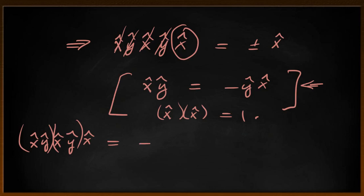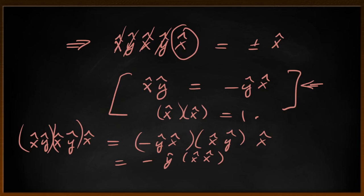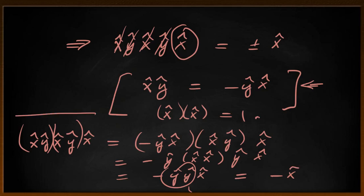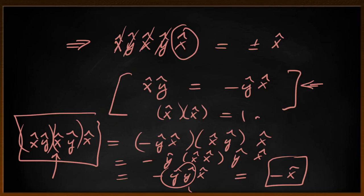Let's go back to the example and see what the actual sign of this product will be — whether it will be plus x-hat or minus x-hat. So: x-hat y-hat, x-hat y-hat, x-hat. One geometric algebra axiom is that the order of any specific multiplication doesn't matter, so we're free to reverse either pair using the anti-commutation rule. This is the same as minus y-hat x-hat times x-hat y-hat times x-hat. We can rearrange to get minus y-hat times (x-hat x-hat) times y-hat x-hat. Now x-hat x-hat is one, so this is minus y-hat y-hat x-hat. And that's one, so the final result is minus x-hat. X-hat y-hat x-hat y-hat x-hat is minus x-hat — this is a vector in disguise.